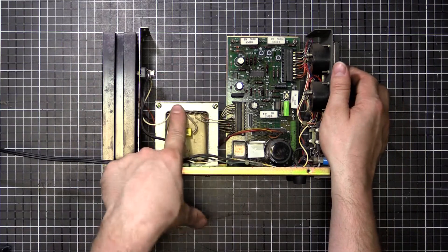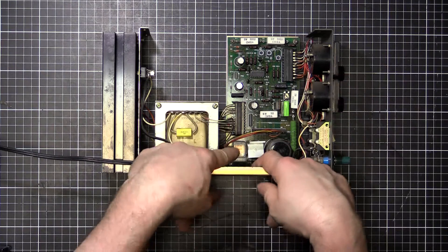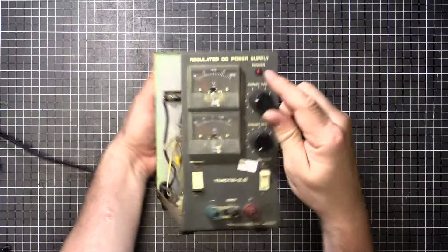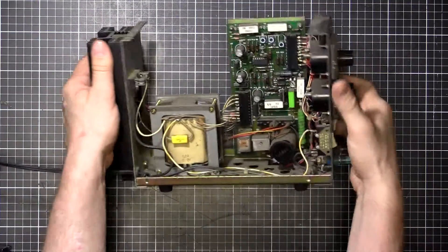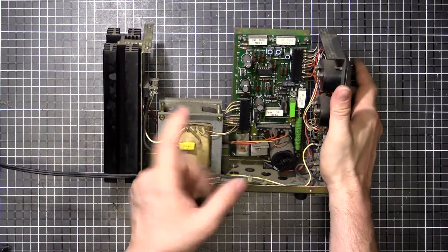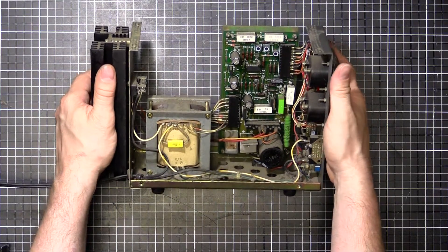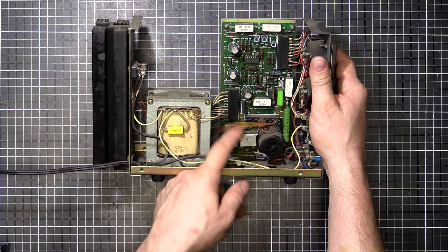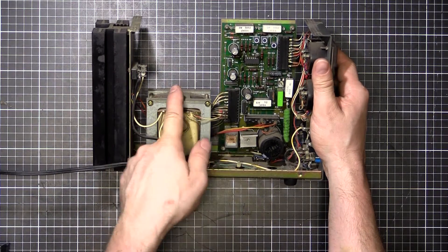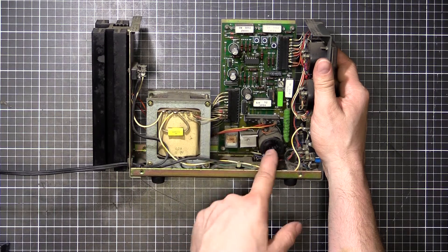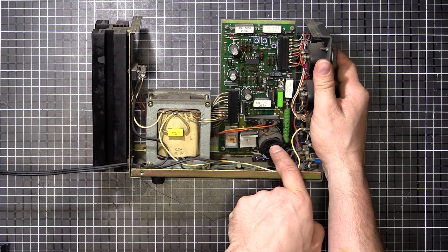So we've got the transformer, that's got multiple taps which is switched by this relay here. So as you dial up and down, the relay will switch in and out to choose the best winding to give you your chosen output voltage and current. Then we've got a bridge rectifier here that's converting the AC from the transformer into our DC, and we've got a big fat smoothing capacitor.